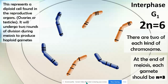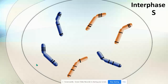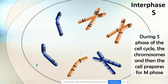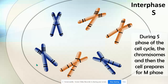At the end of meiosis, each gamete should have three chromosomes. So if we're starting with six, we're going to cut that number in half, so each gamete has three. In S phase, the chromosomes go through DNA replication, and here we have our sister chromatids that are produced. This is still in interphase, the cell preparing for M phase. In G2, it prepares.